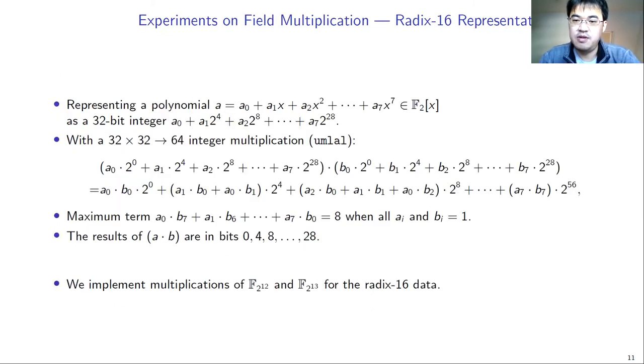Here, we show a new implementation for the finite field multiplication. We call this a red-existing multiplication. Here, we have a polynomial of degree 7, A. And we can store the polynomial as a 32-bit integer. The constant term is stored at bit 0, and then bit 4, bit 8, and so on. If we store the polynomial in this way, then an integer multiplication can perform the bit-polynomial multiplication as the equation showed on this page.